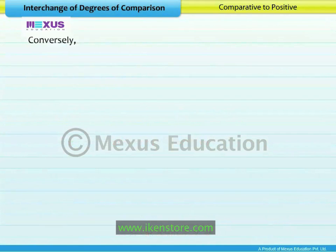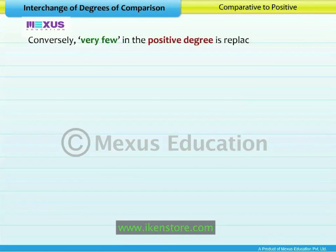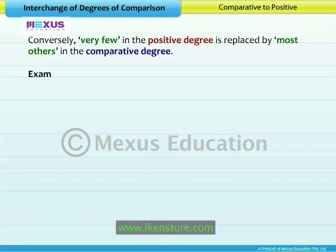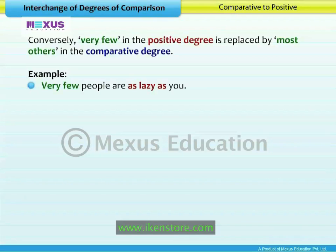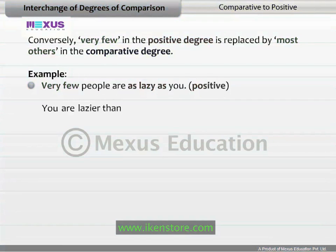Conversely, 'very few' in the positive degree is replaced by 'most others' in the comparative degree. Therefore: Very few people are as lazy as you becomes You are lazier than most other people.